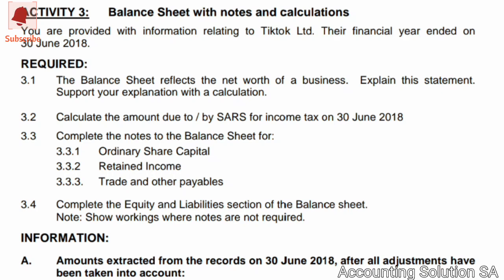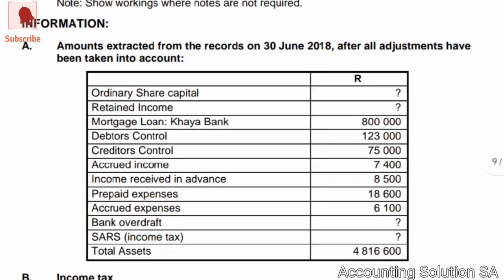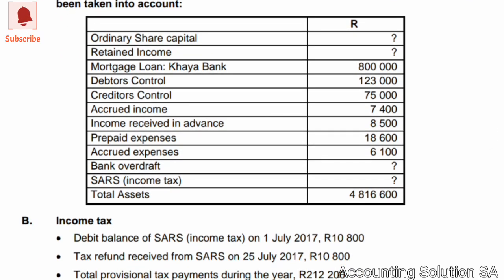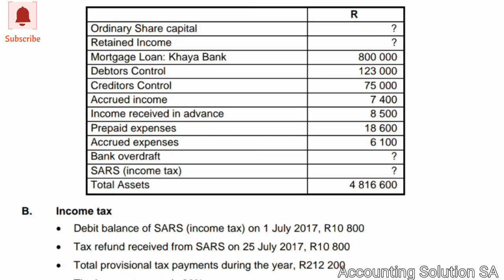Question 3.3 is trade and other payables notes. The reason I skipped the other two notes is because I have another video where I prepared ordinary share capital and retained income notes. Then the information given covers amounts extracted from records on 30 June 2018 after all adjustments. They did not give us the income tax balance because we are looking for that amount.